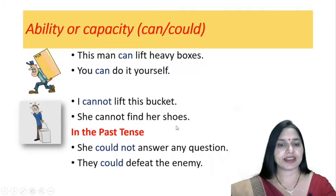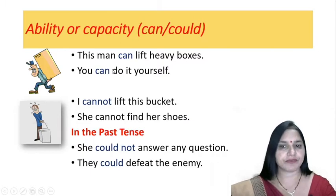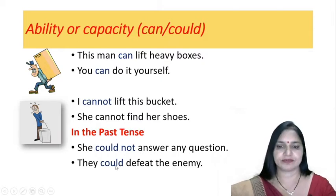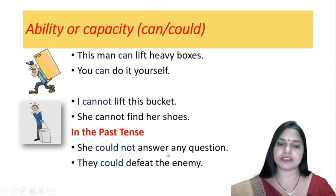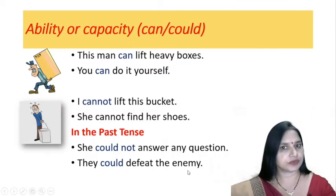'She cannot find her shoes' — she does not have the ability to find her shoes. And in the past tense, instead of 'can' we use 'could' to express ability or capacity. 'She could not answer any question' — she did not have the ability to answer any question. 'They could defeat the enemy' — they had the ability to defeat the enemy.